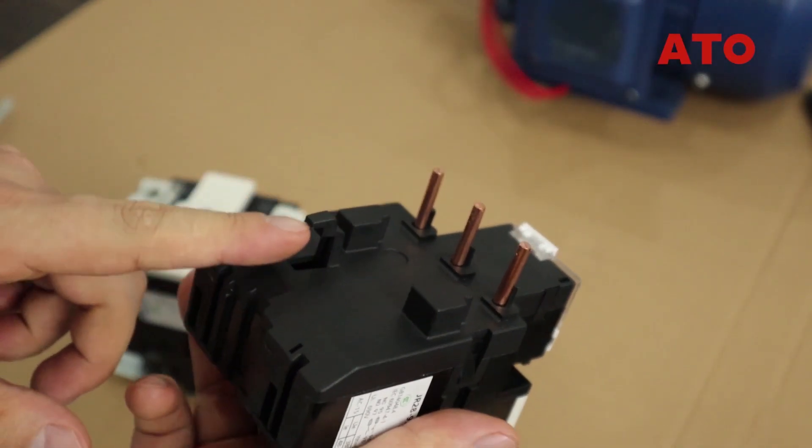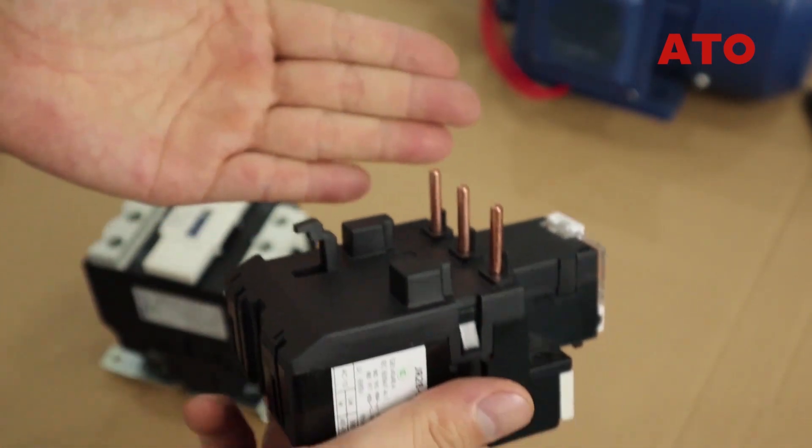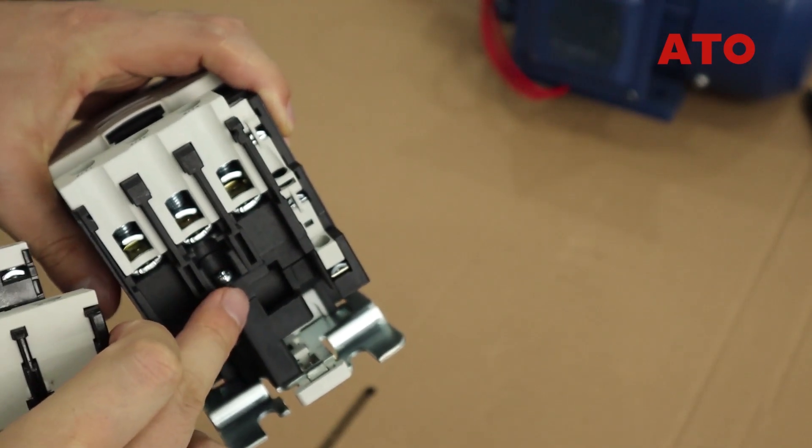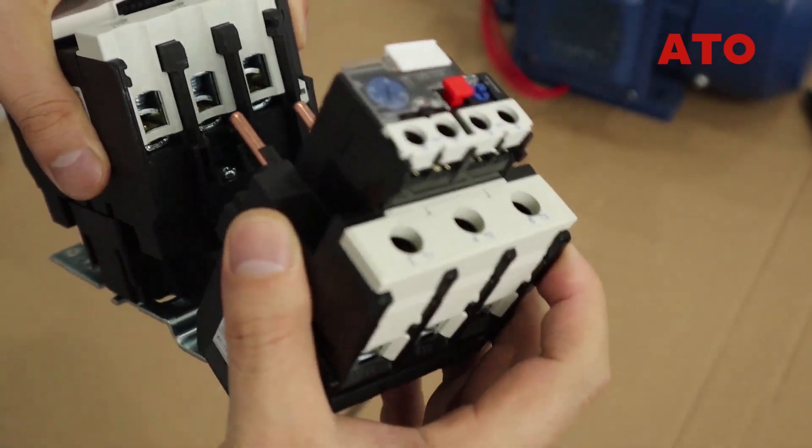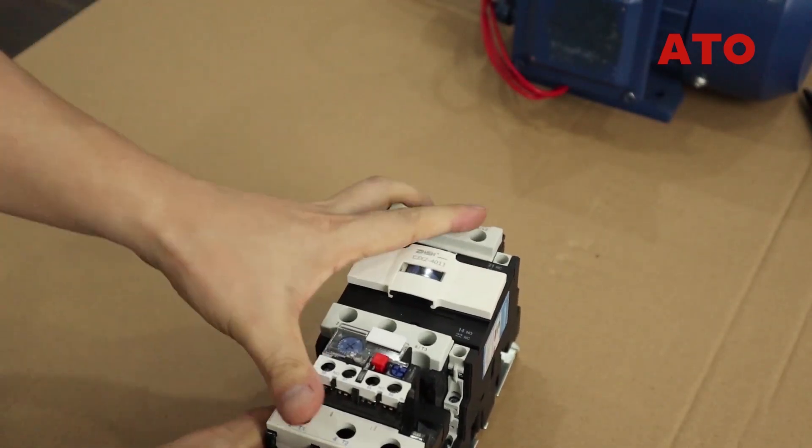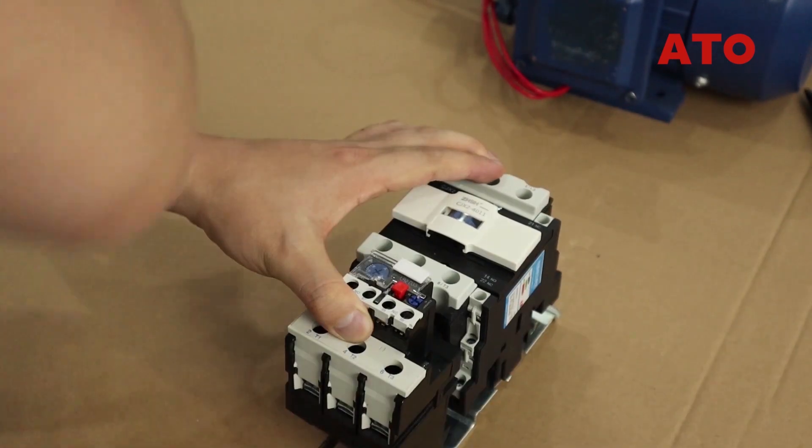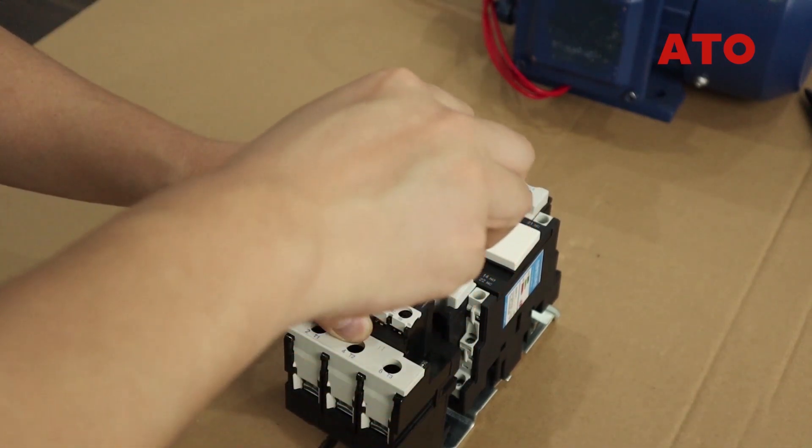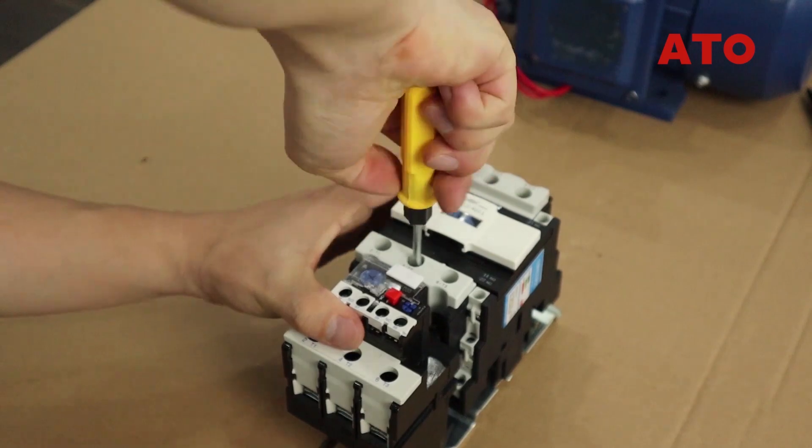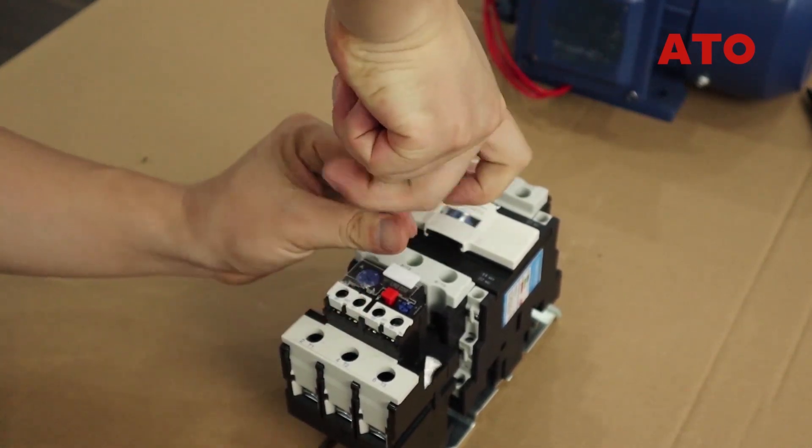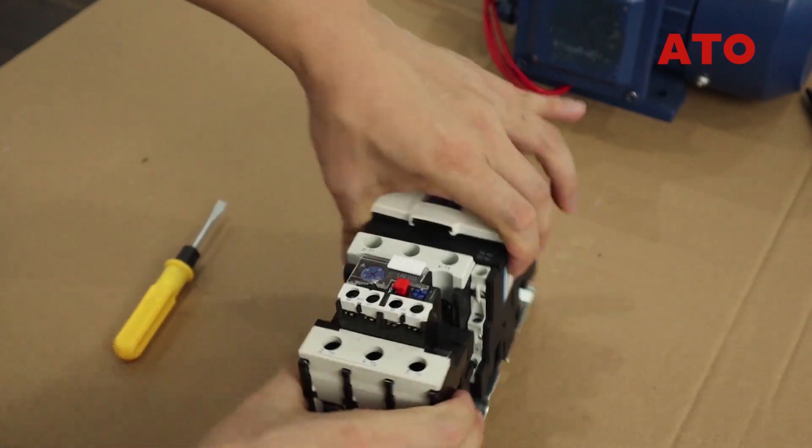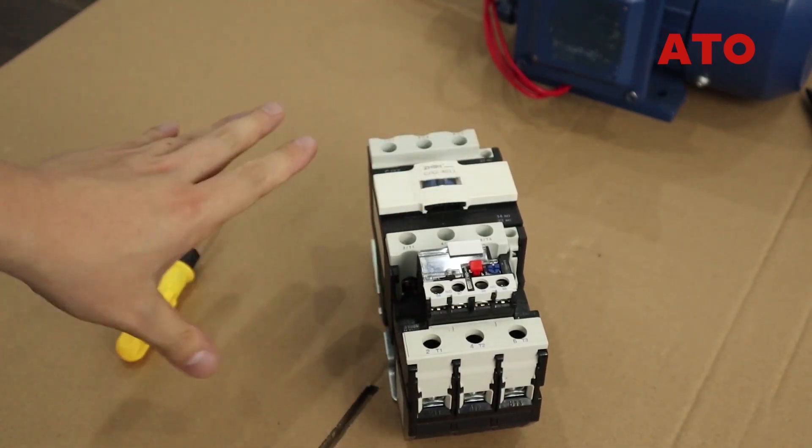There is a buckle on the relay to be inserted into the hole on the contactor. Take a screwdriver to tie them together.